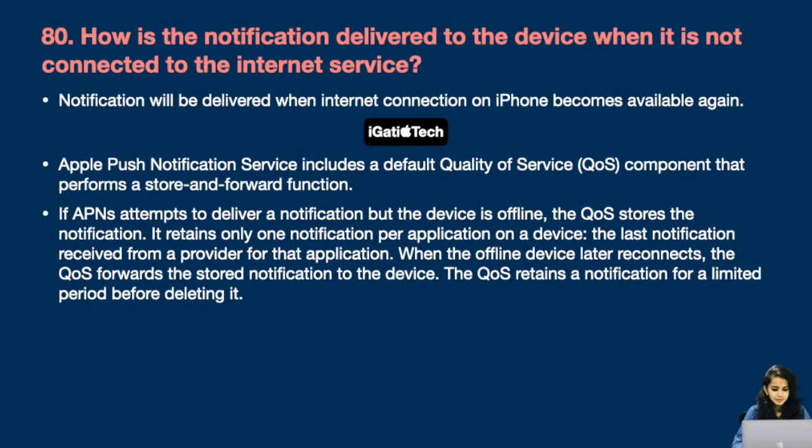Question number 80: How is a notification delivered to the device when it is not connected to the internet? Notifications will be delivered when the internet connection on the iPhone becomes available again. Apple Push Notification Service includes a default Quality of Service component that performs a store-and-forward function. If APNS attempts to deliver a notification but the device is offline, the Quality of Service stores the notification.